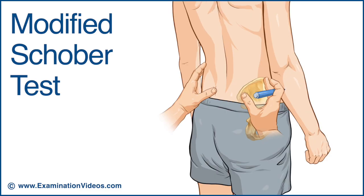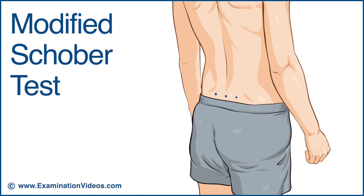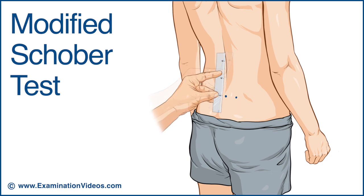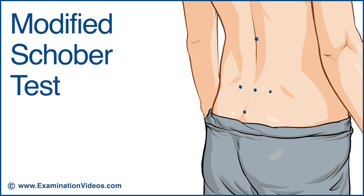Mark the location of the PSISs. Now mark the center point between the two, and then measure and mark two inches below the center point and four inches above it. This gives you a distance of six inches between the upper and lower points.